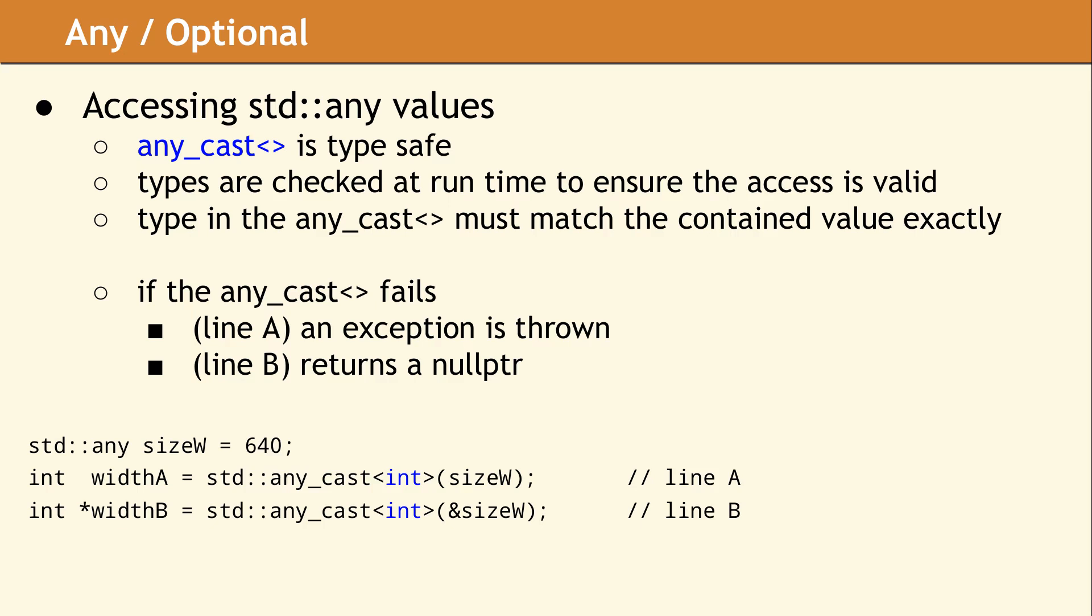In order to use the value stored in an std::any variable, you must do an operation called any_cast. The any_cast will check to ensure the type you are asking for exactly matches the type currently stored in the variable. If this check fails, no value is returned and an error will be reported.